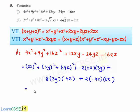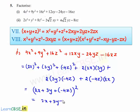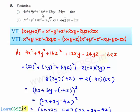This is equal to 2x plus 3y plus minus 4z whole square. By using the seventh identity, we can write this as 2x plus 3y minus 4z multiplied by 2x plus 3y minus 4z. Therefore, 4x square plus 9y square plus 16z square plus 12xy minus 24yz minus 16xz can be factorized as 2x plus 3y minus 4z multiplied by 2x plus 3y minus 4z.